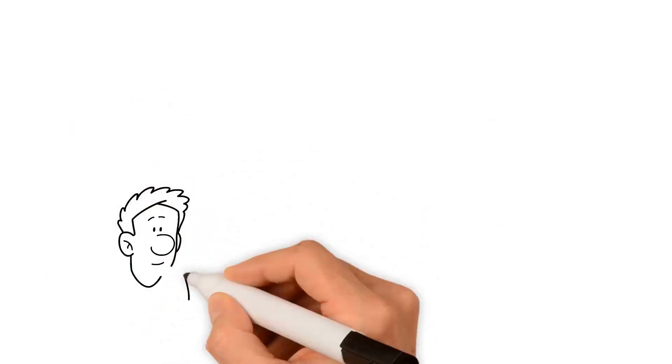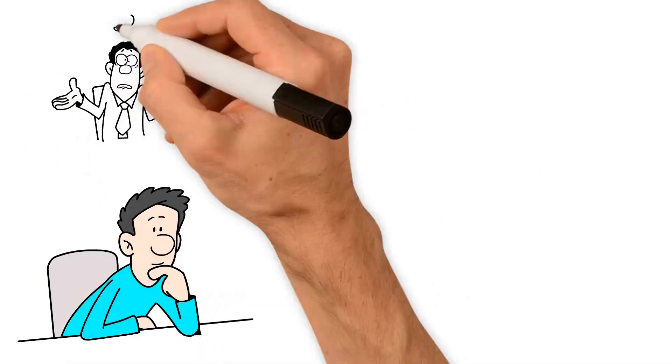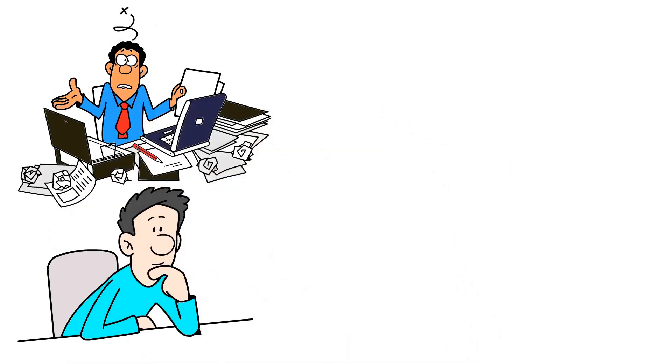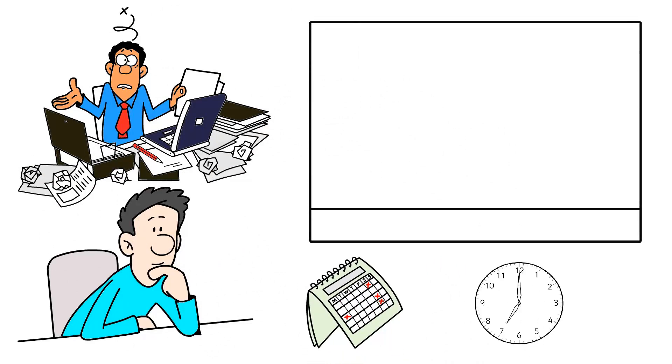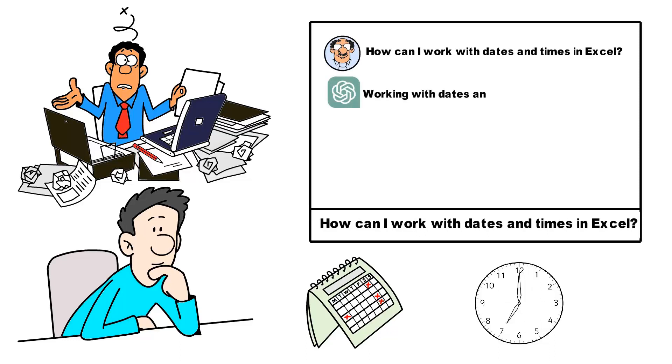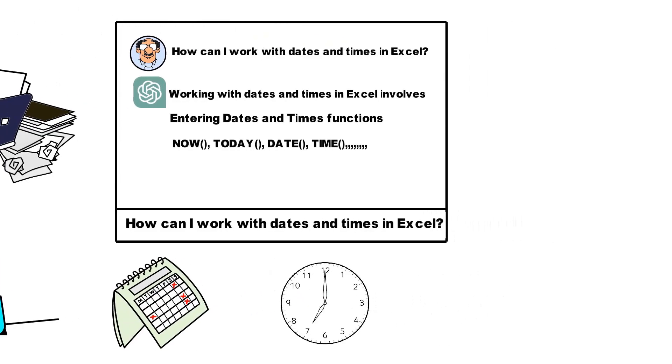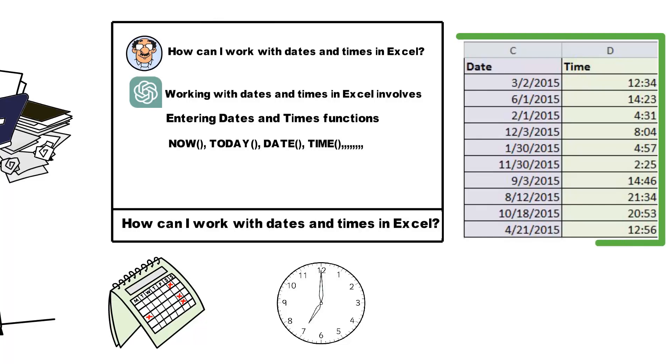A user also might want to understand Excel functions that handle specific problems. For example, you may need to handle date and time data and ask, how can I work with dates and times in Excel? ChatGPT can then explain Excel's wide array of date and time functions, like now, today, date, time, and others, providing examples of how to use them to calculate the difference between dates, add or subtract dates, and other tasks.